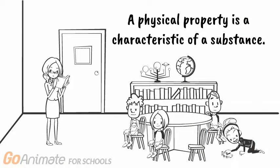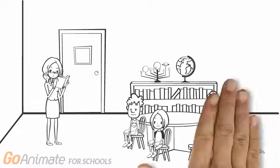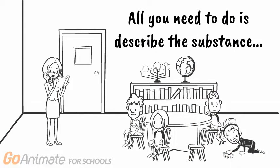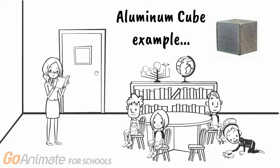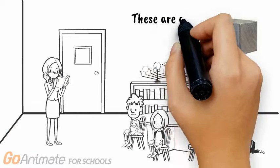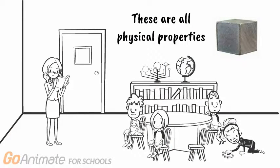A physical property is a characteristic of a substance. All you need to do is describe the substance. Let's look at an example. The piece of aluminum — it is a cube, it is silver or metallic, it is hard, it is smooth. These are all characteristics, and these are all physical properties. They are characteristics of our aluminum cube.